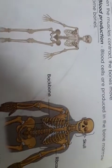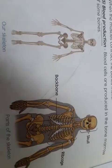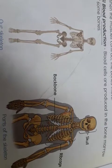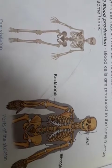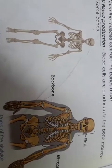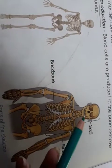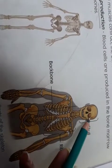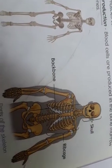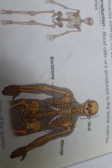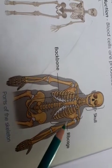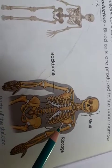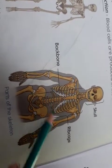The first function is protection — the skeleton protects our internal organs. The skull protects the brain. The ribcage protects our internal organs like the heart and lungs.